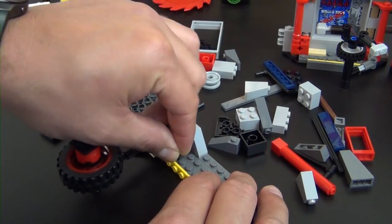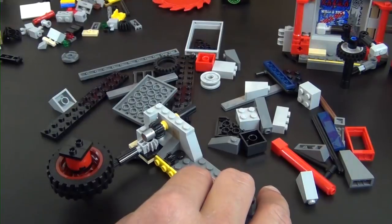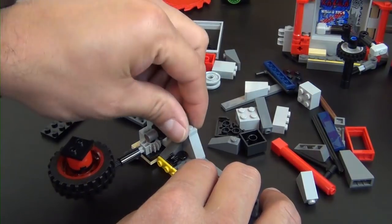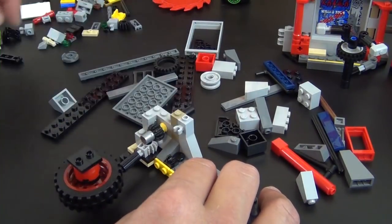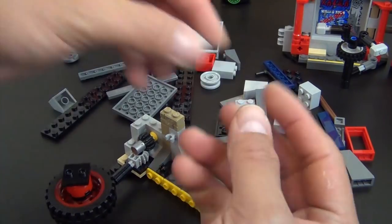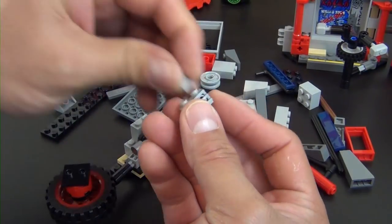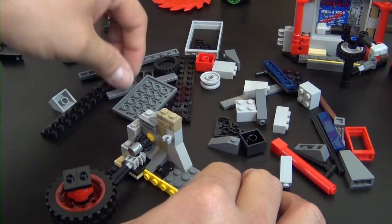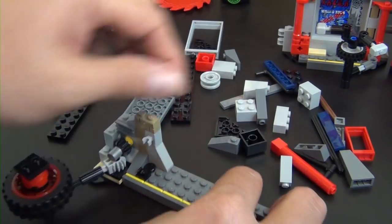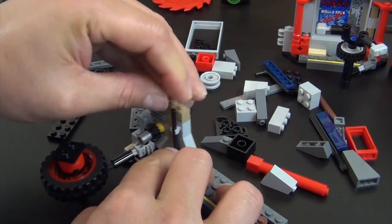Clip, go right here. Plates will help hold everything together. Some masonry profile brick, brick with studs on the side. Put a grill tile and a little cheese slope. Tile there. And now we have this black piece, clipped there.